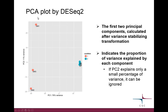Then there's the principal component analysis plot. It's a bit similar to the MDS plot but the mathematics behind are different, so it shows slightly different things. With the PCA, we use the DESeq2 tools within the Chipster tool, and we always plot the first two principal components, which are calculated after the variance stabilizing transformation. On the x-axis you can see principal component 1 and on the y-axis principal component 2. They indicate the proportion of variance explained by each component. Principal component 1 is explaining 76% of the variance between these samples, and principal component 2 is explaining 11%.